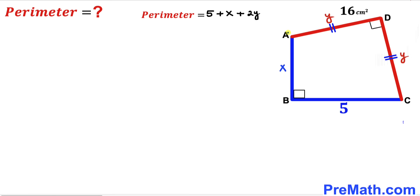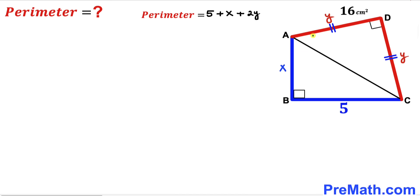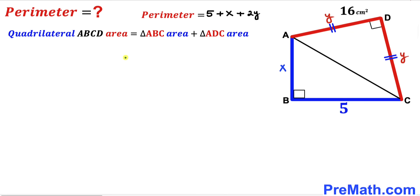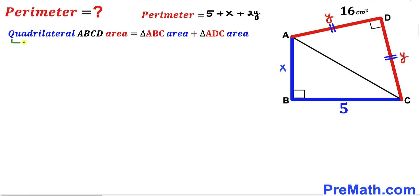I'm going to connect these two vertices A and C. As a result we end up with two right triangles: right triangle ABC and right triangle ADC. Now let's make an observation — the area of quadrilateral ABCD is going to be the sum of the area of triangle ABC plus the area of triangle ADC. We know this quadrilateral area has been given to us as 16 centimeters square, so our task is to calculate both triangle areas.